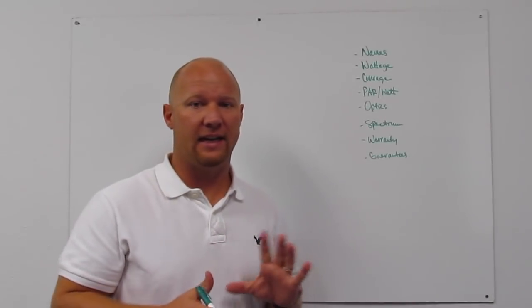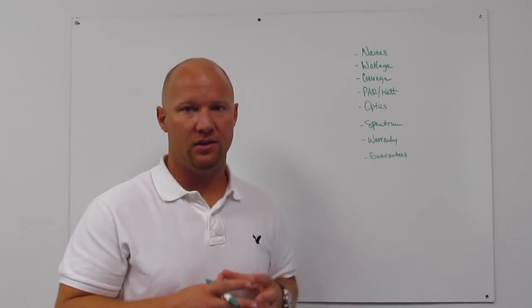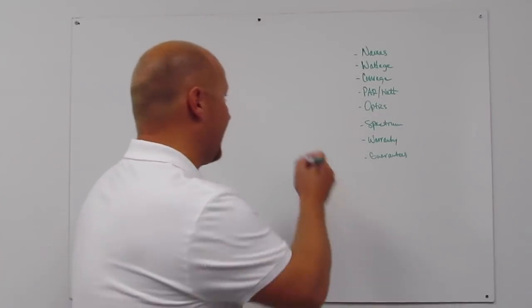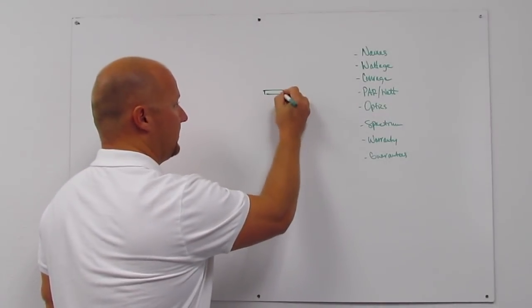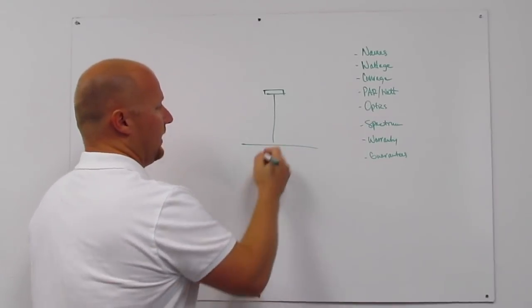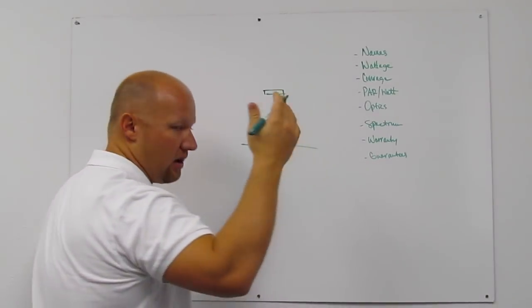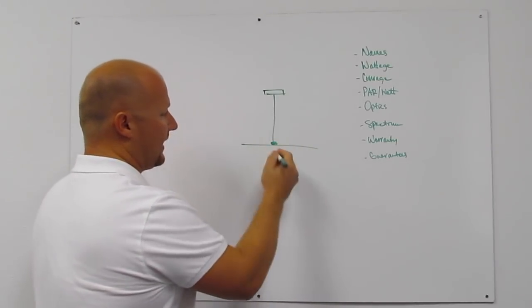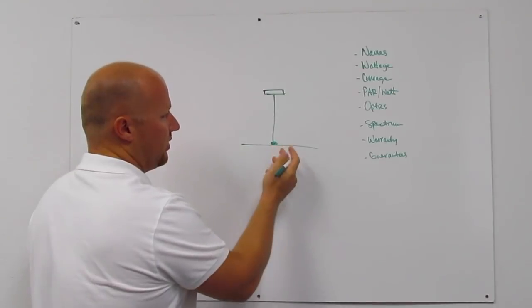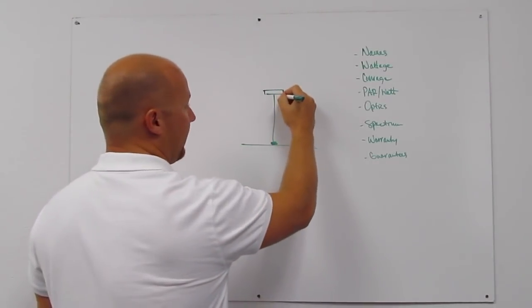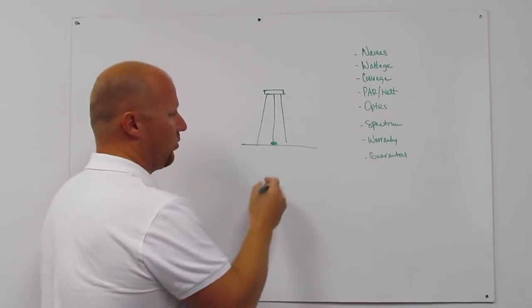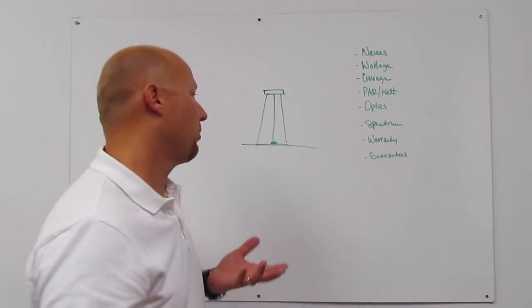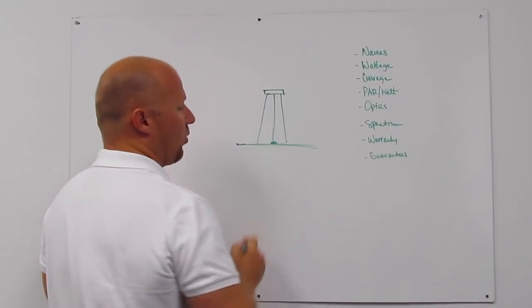Par per watt is a very key indicator that you guys need to pay attention to. A lot of companies will give you the par. The problem is that's the center par. So if you take a light, any given light source and you measure straight directly down underneath it, this is the center par. So they'll say, oh, I have 2000 par or some crazy number at this center point. The problem is anyone could get this number to two or 3000 par if they wanted to. You could put a 45 degree optic and have three or four or 500 watts come straight down here and cover a one foot by one foot space and have crazy par numbers. What you need to look for is the total par per watt.